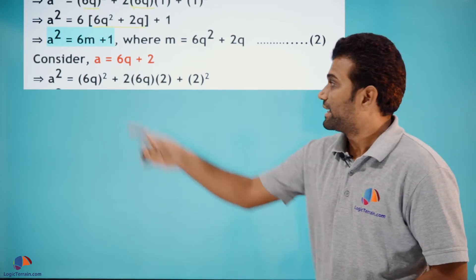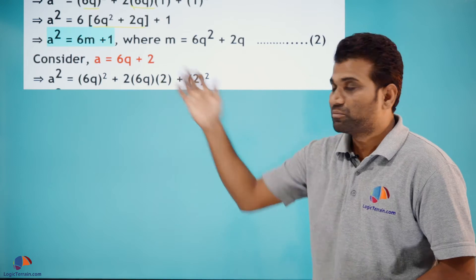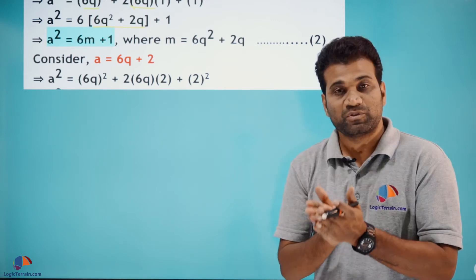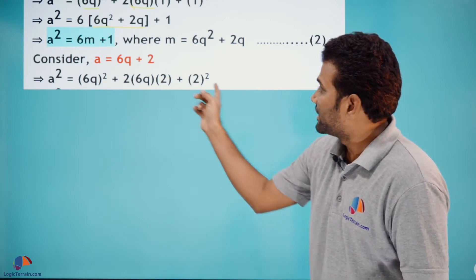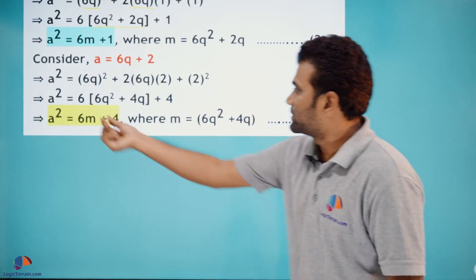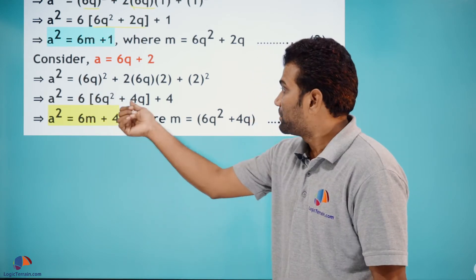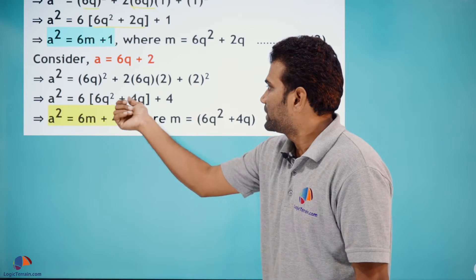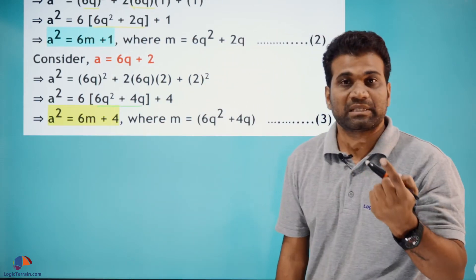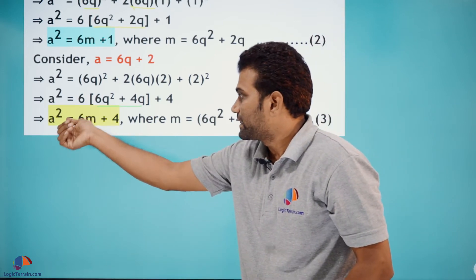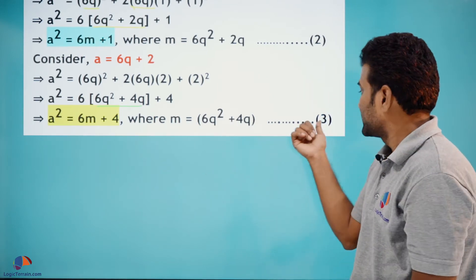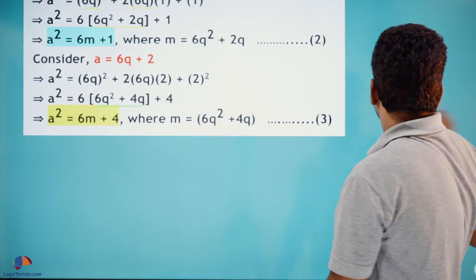Now consider the third form: a = 6q+2. Squaring both sides using (a+b)² expansion: a² = 36q² + 24q + 4 = 6(6q²+4q) + 4. You can see this is of the form 6(something) + 4. So a² = 6m+4, where m = 6q²+4q. Let this be equation (3).